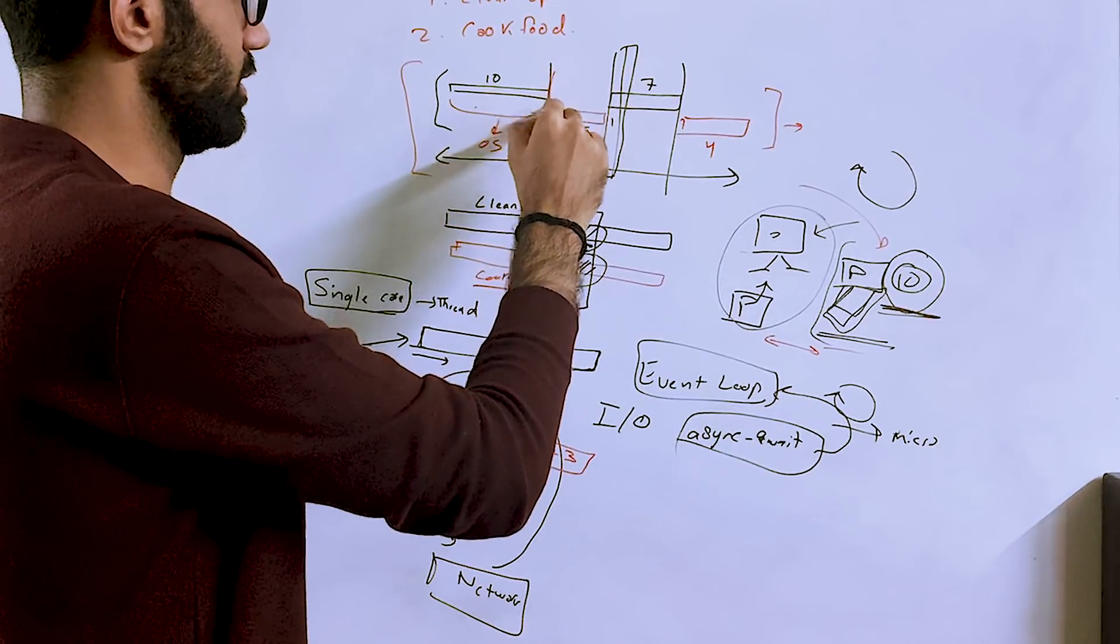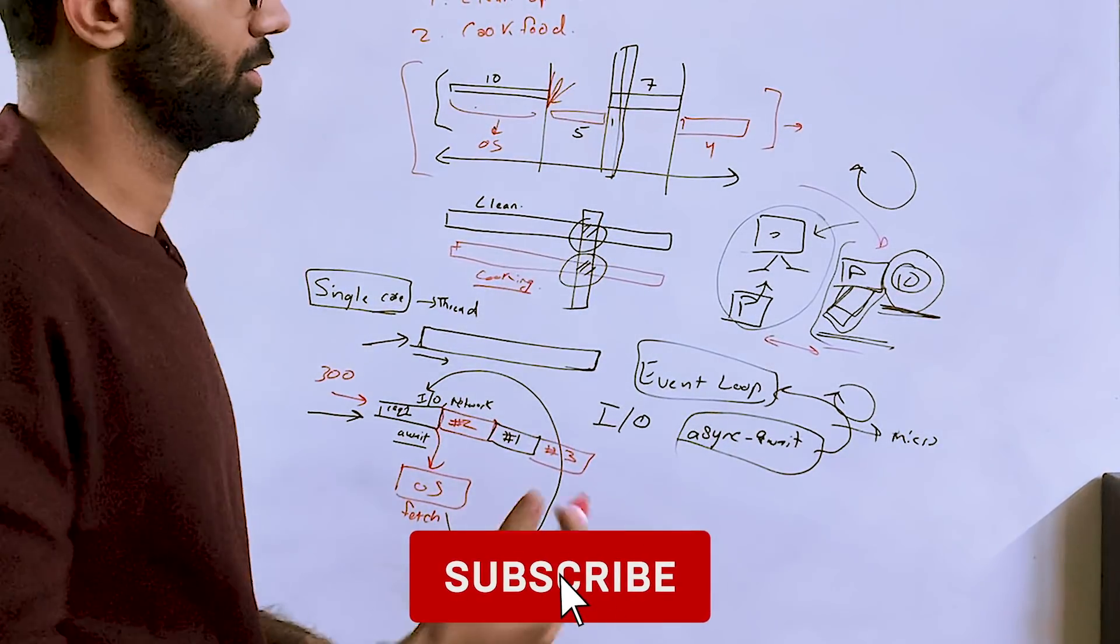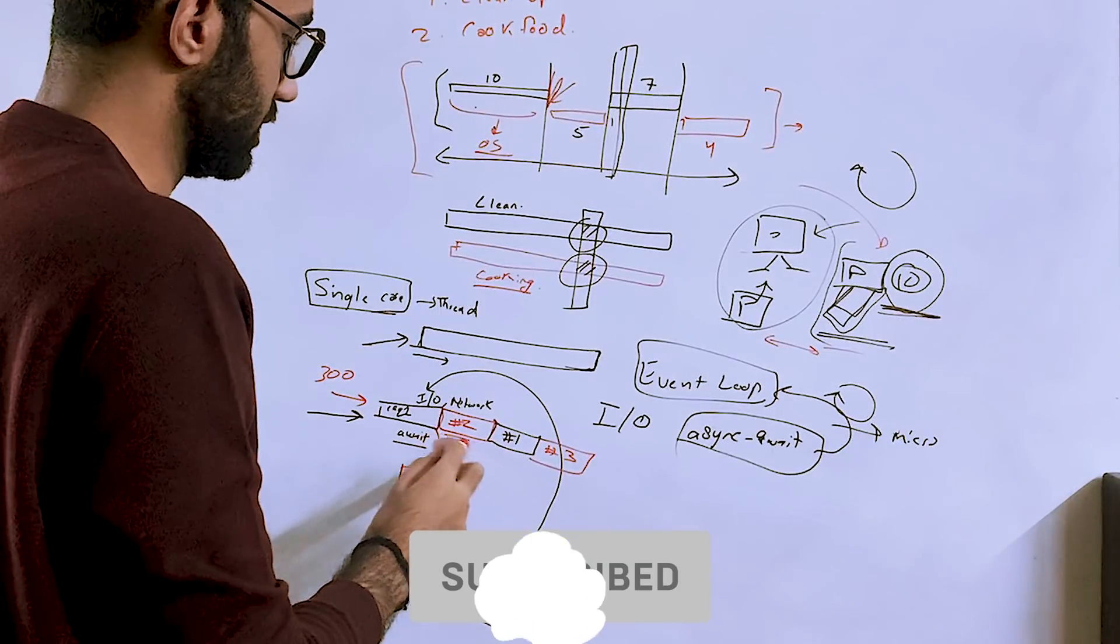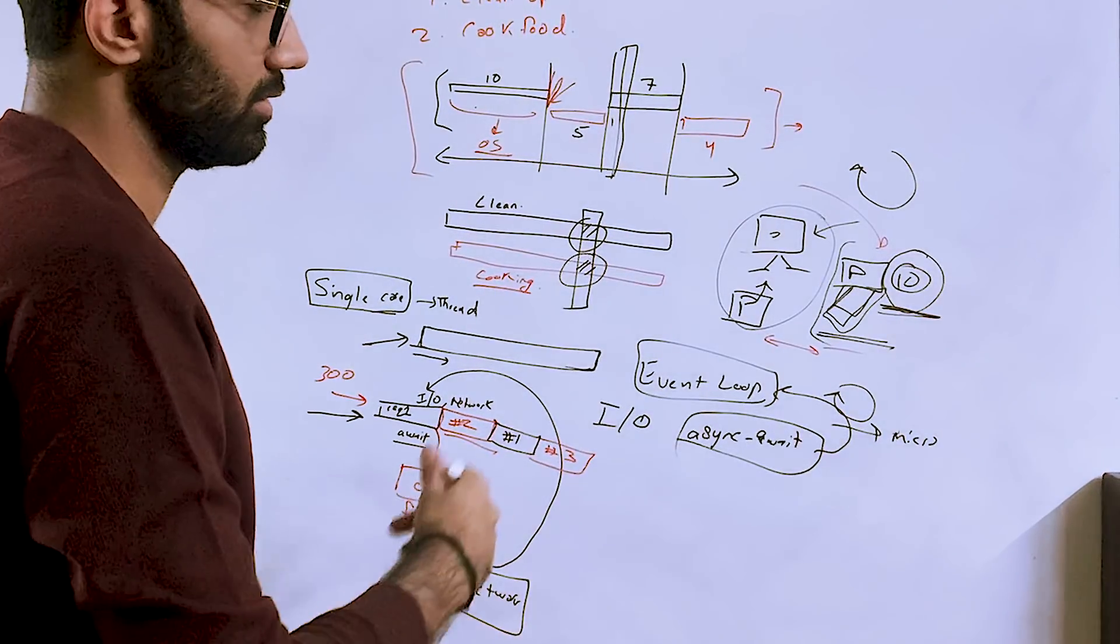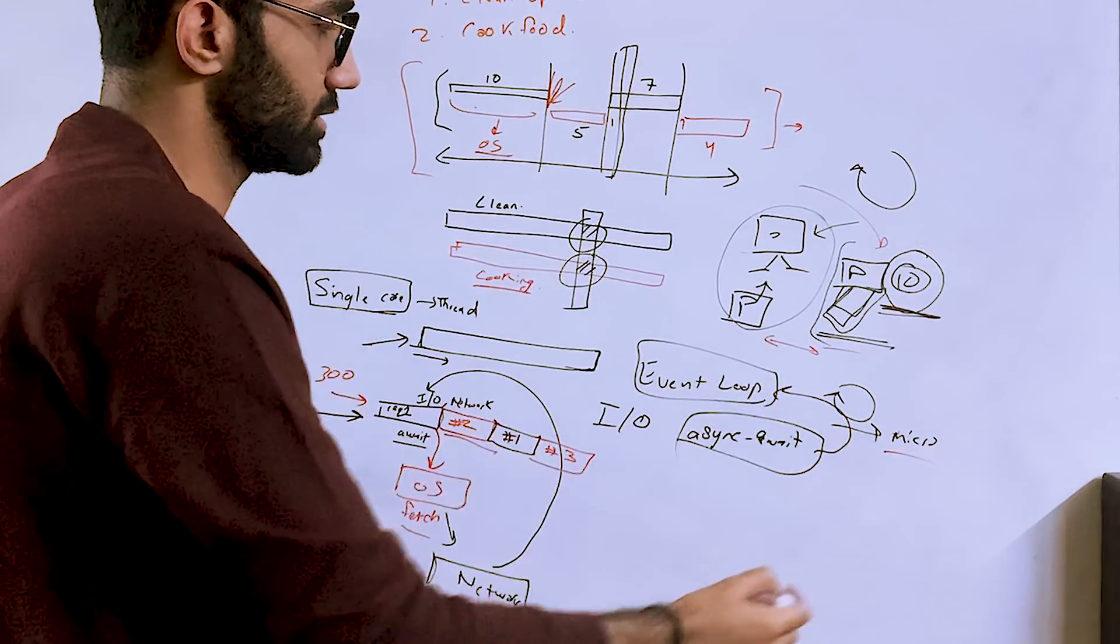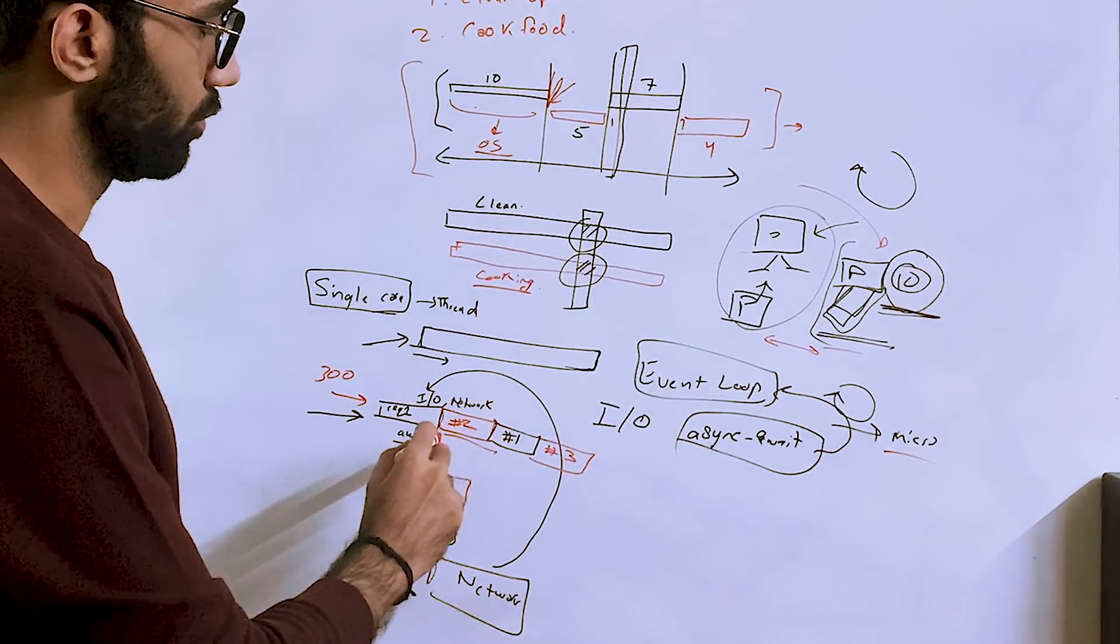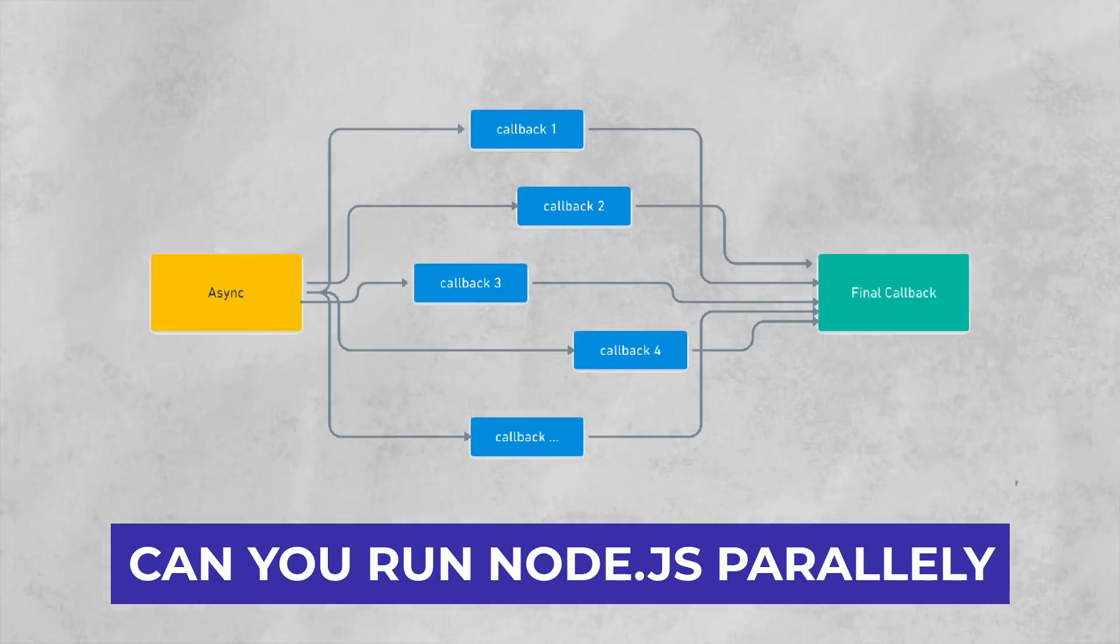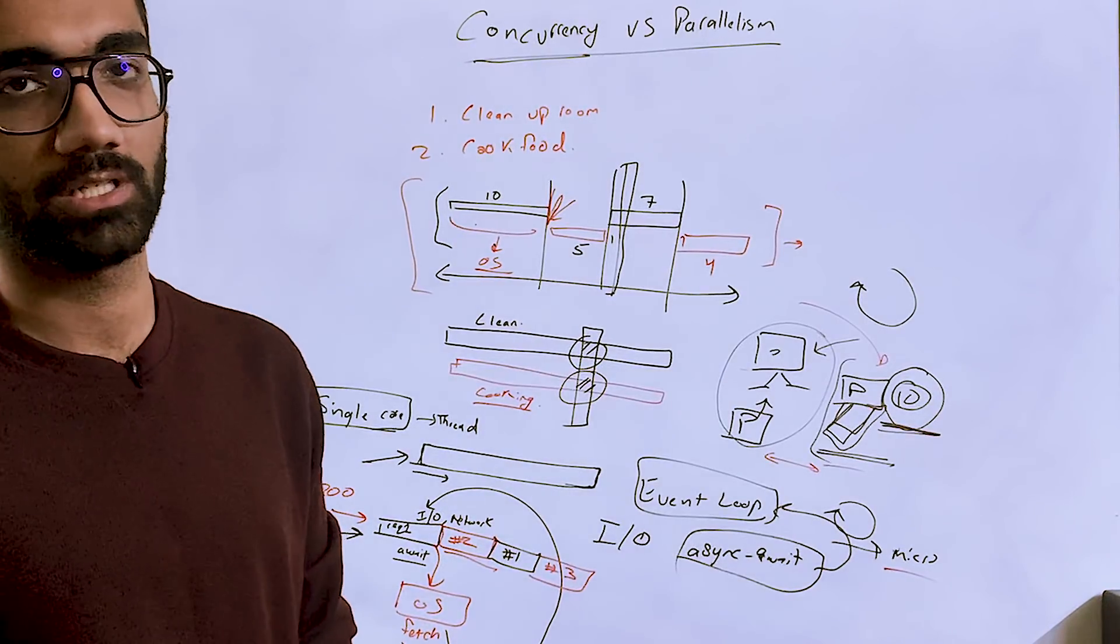The place where Node would actually offload to the operating system is where it faces something like a network request or some sort of asynchronous action. Or if you can just put it in a microtask queue or a queue which Node.js maintains, they'll automatically move it to the next tick, the next cycle. Now the question is: can you run Node.js parallelly?